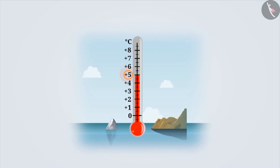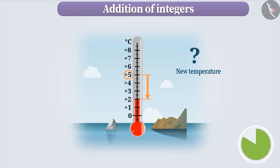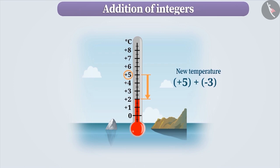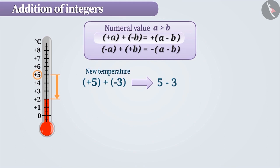Now let us suppose the temperature is plus 5 degrees centigrade and there is a change of minus 3 degrees centigrade in the temperature. So how will you find the new temperature? Let me tell you. It can be found by finding the value of plus 5 plus minus 3. If numbers to be added have different signs, then we ignore the signs and subtract the smaller number from the larger number. Later, the sign of the larger number is included in the result. Here, we subtract 3 from 5 and the sign of the larger number, which is plus, is included in the result, giving us plus 2.